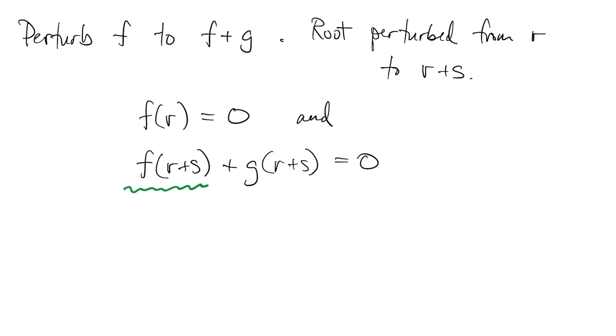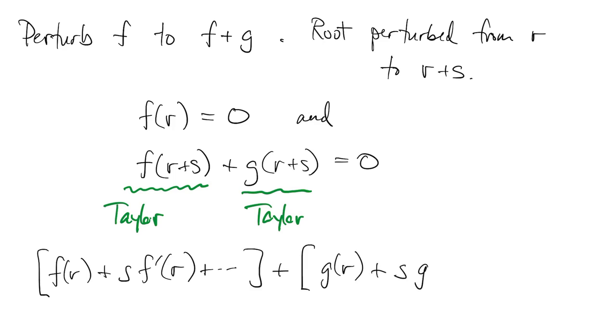Now we're going to do Taylor expansions on both of these terms for f and g. So we expand around the point r, and we just want the first two terms here because s is small, so all that equals zero.